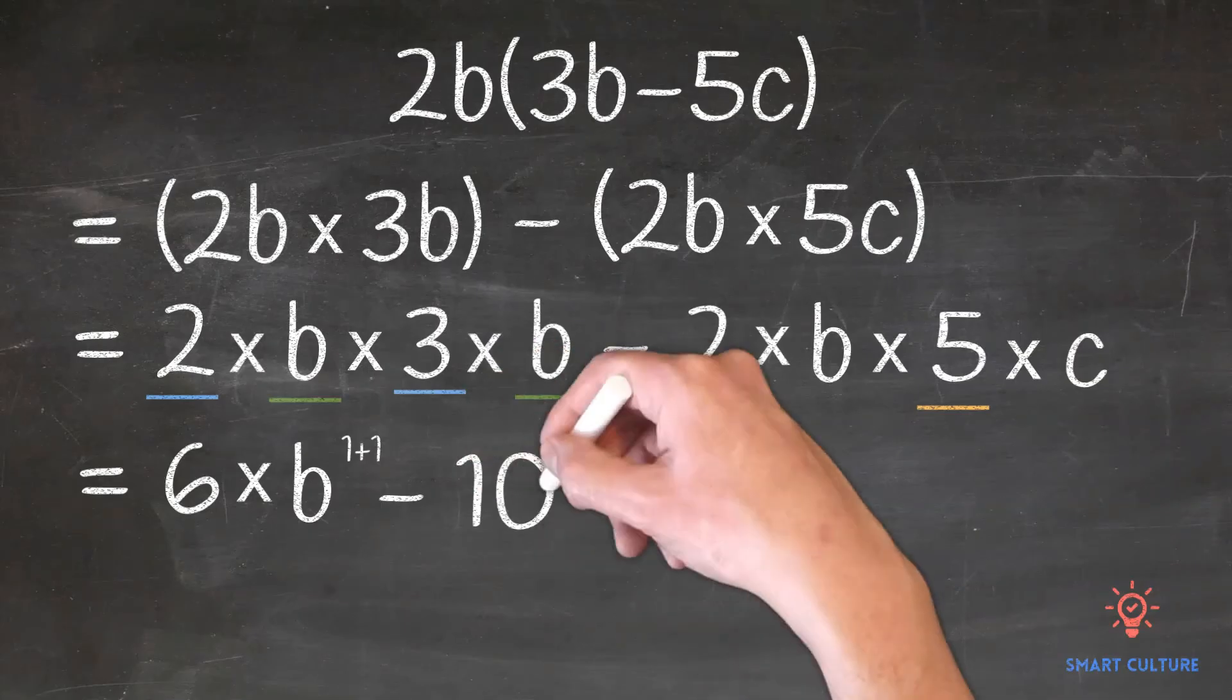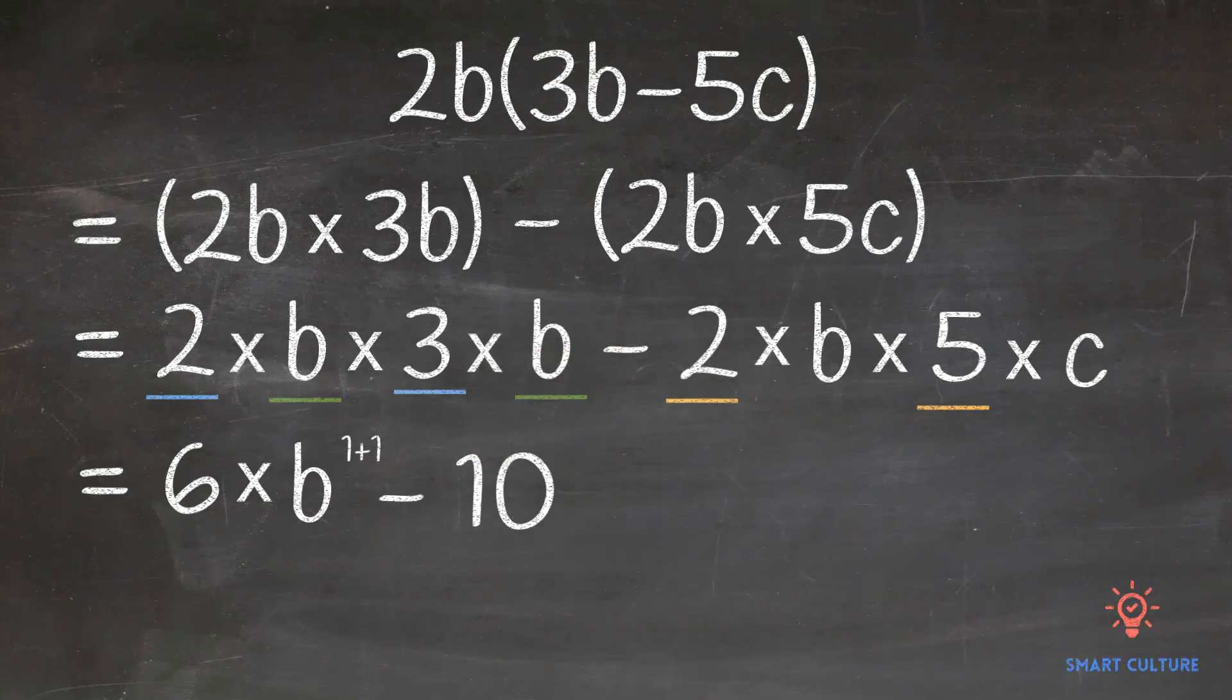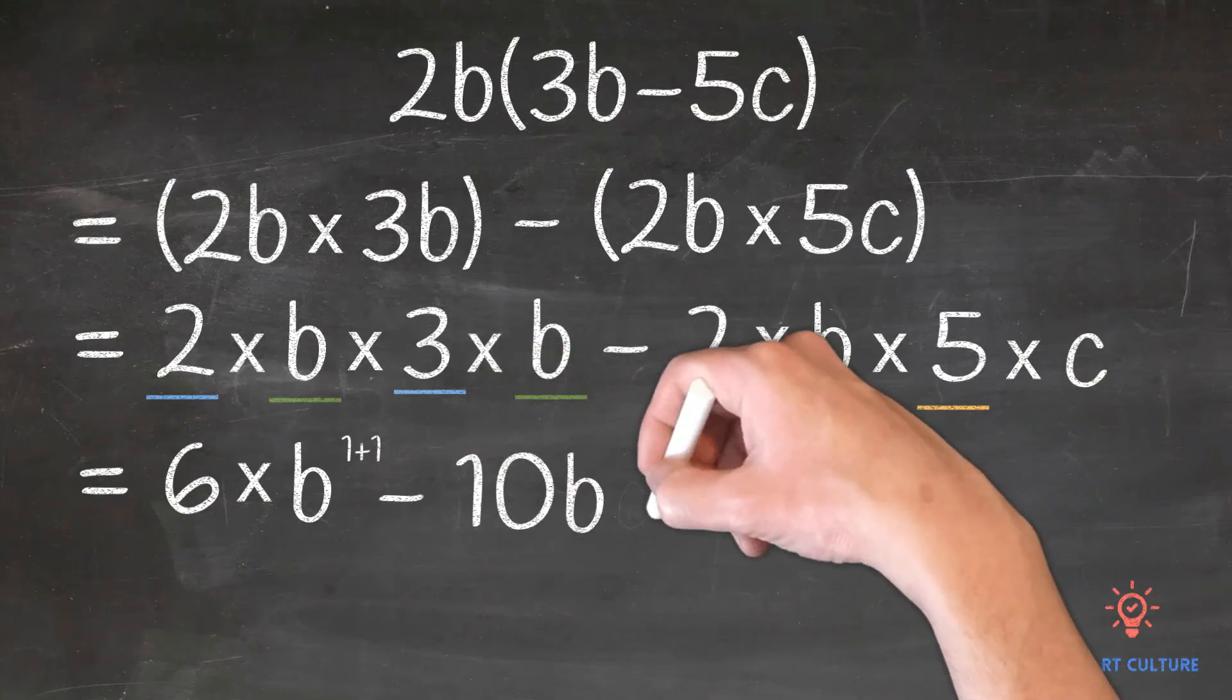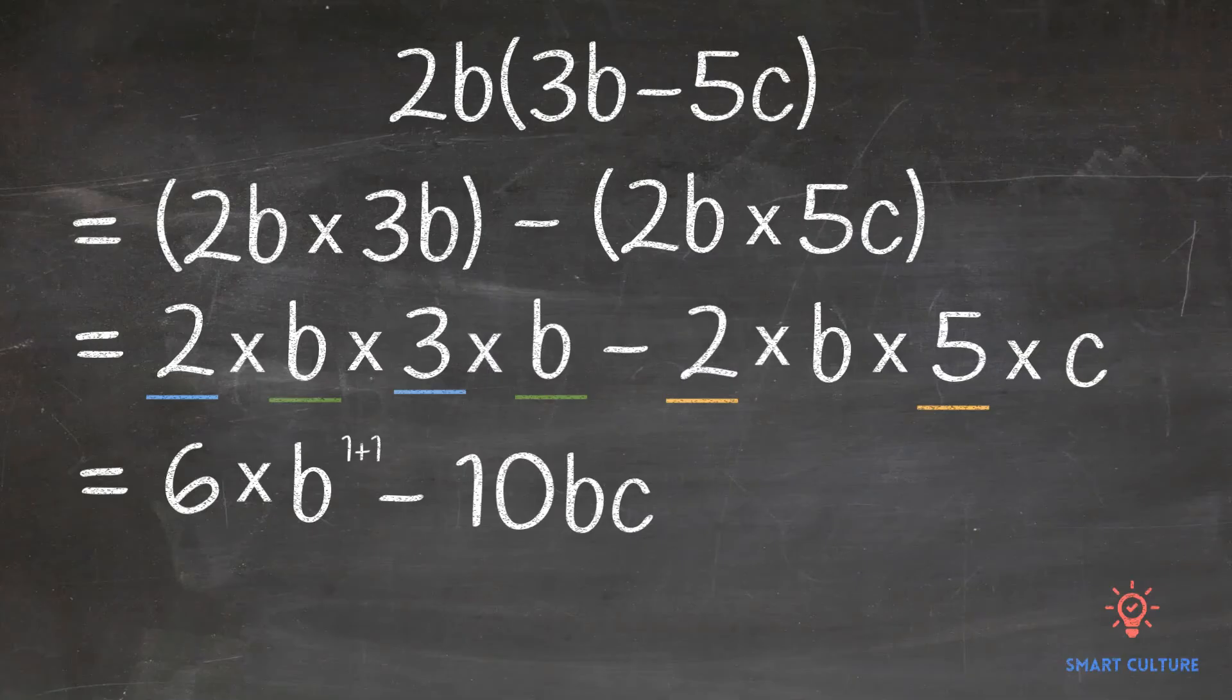So the final answer will be equal to 6b squared minus 10bc.